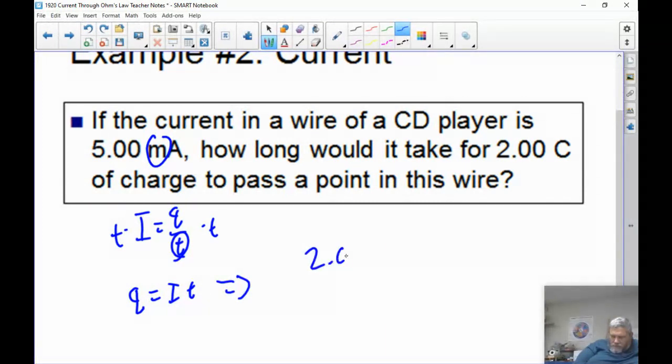Q is 2. I is 5 milliamps, but let's figure out what 5 milliamps is. We're going to have to convert that, so 5.00, but when we go from bigger to smaller, which in milliamps is small, we have to go back to the left. So 1, 2, 3, the decimal place goes here. So it's 0.005 times T.